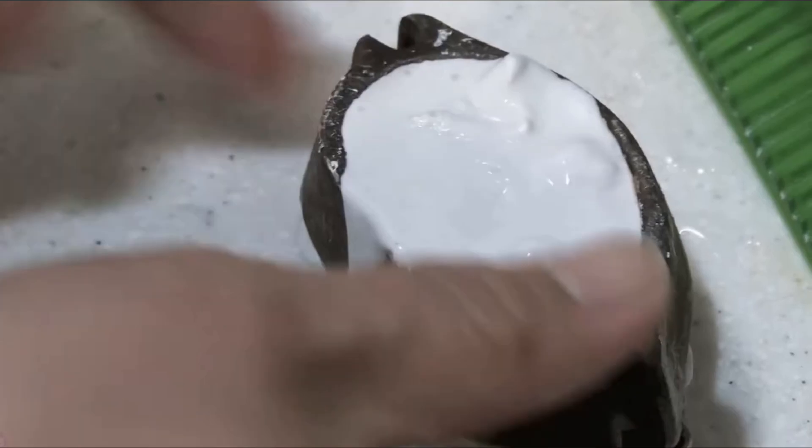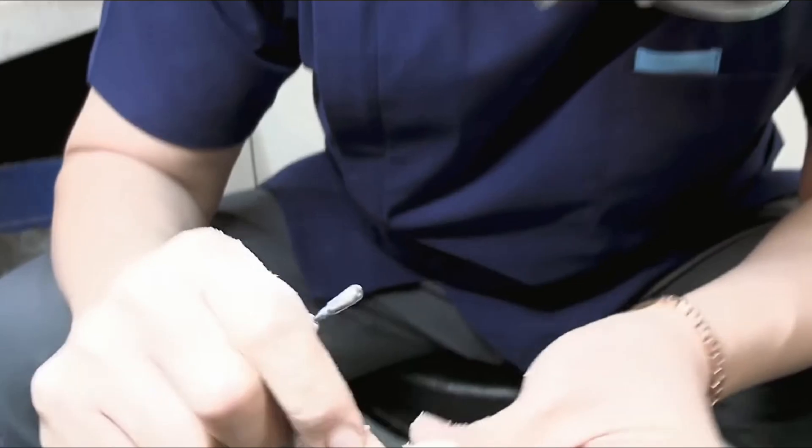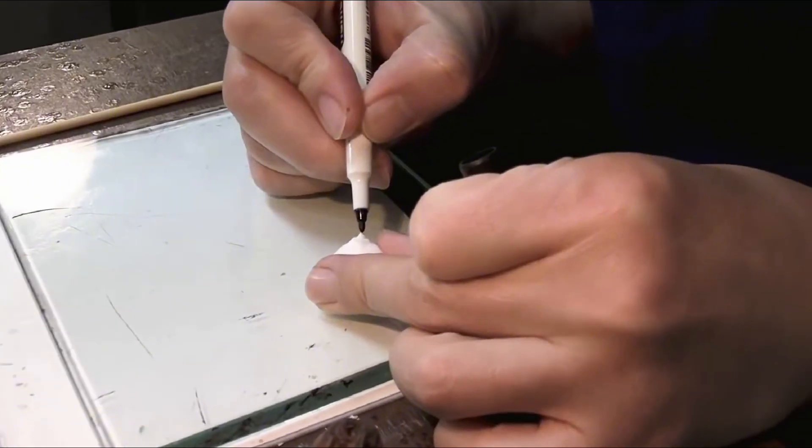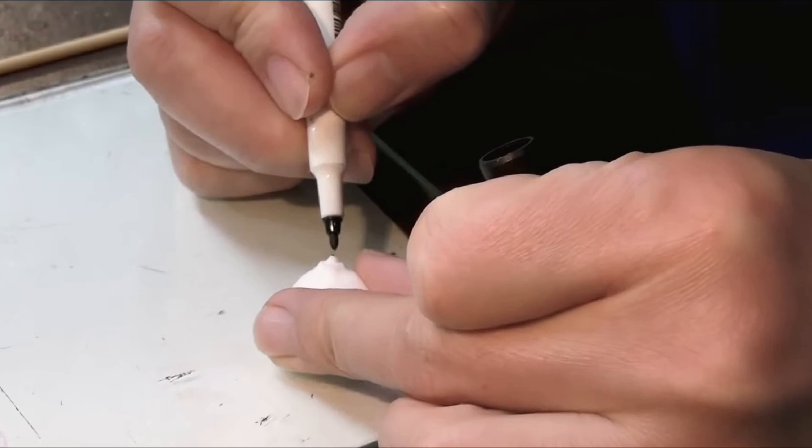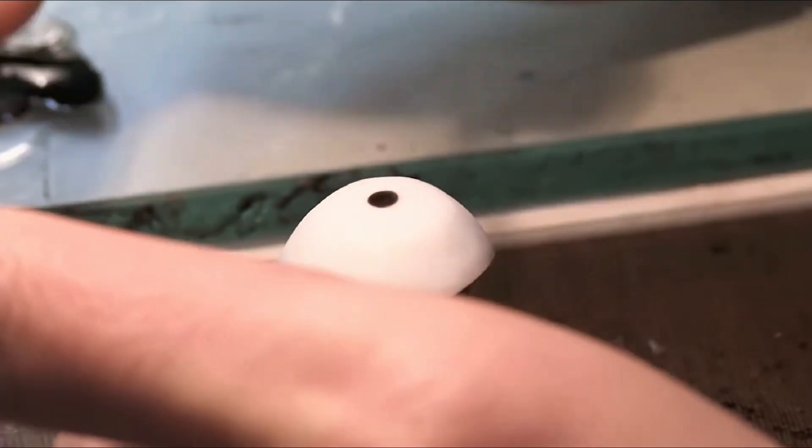For prosthetic arms, the design is tailored using a 3D model, followed by 3D printing and the integration of advanced components. Sensors detect muscle signals, enabling the user to control movements with precision. The final fitting and training sessions help patients regain functionality and independence.